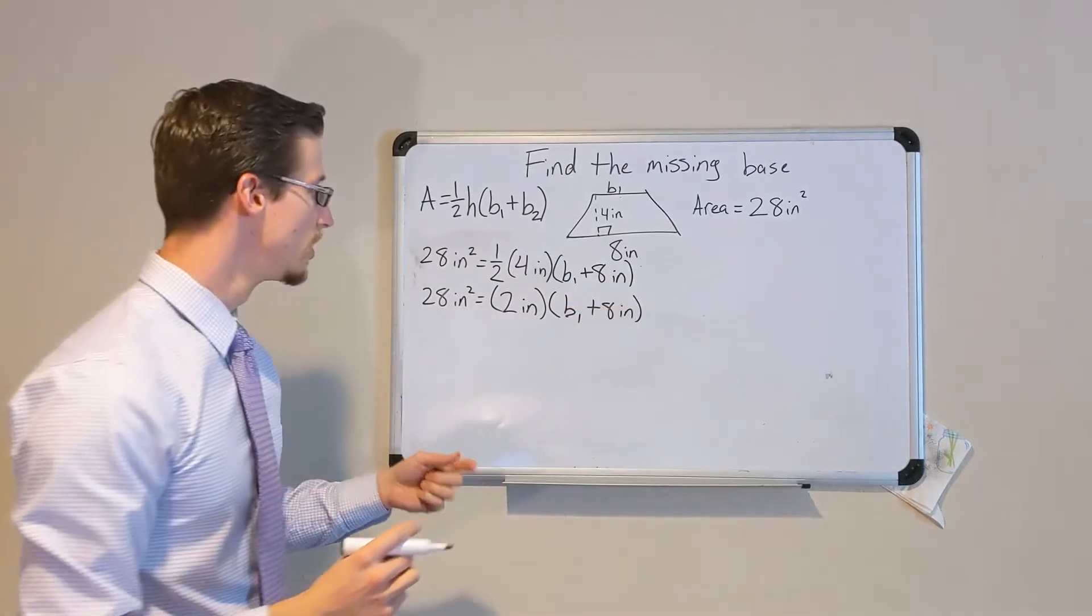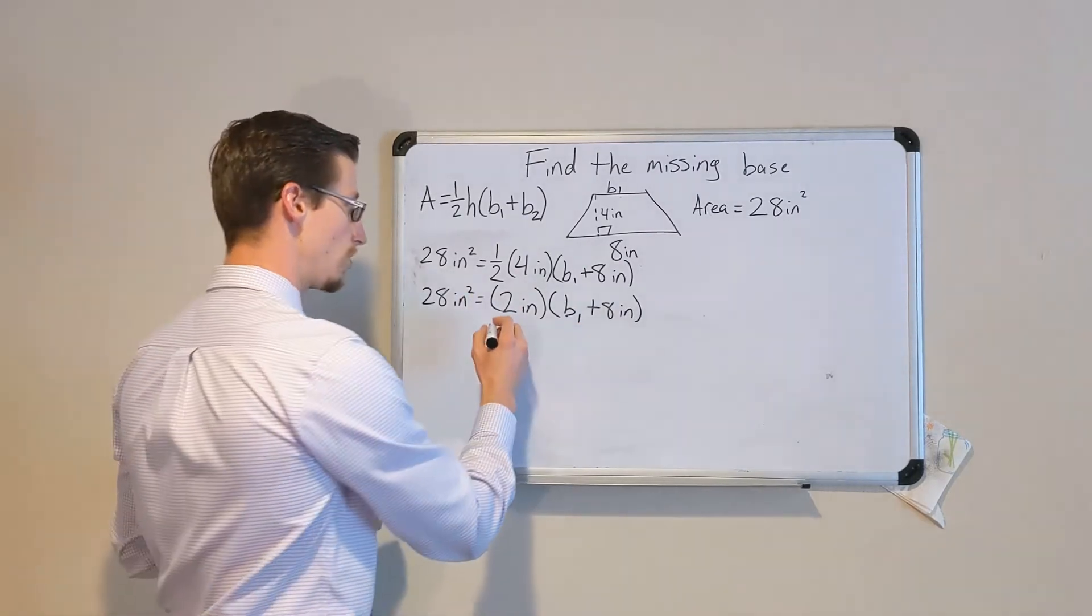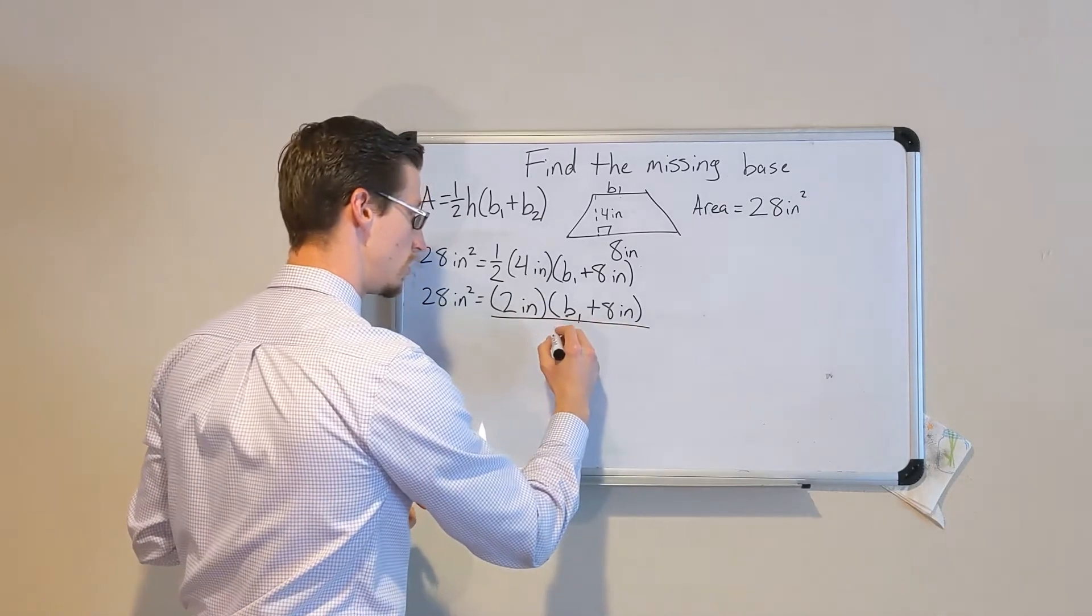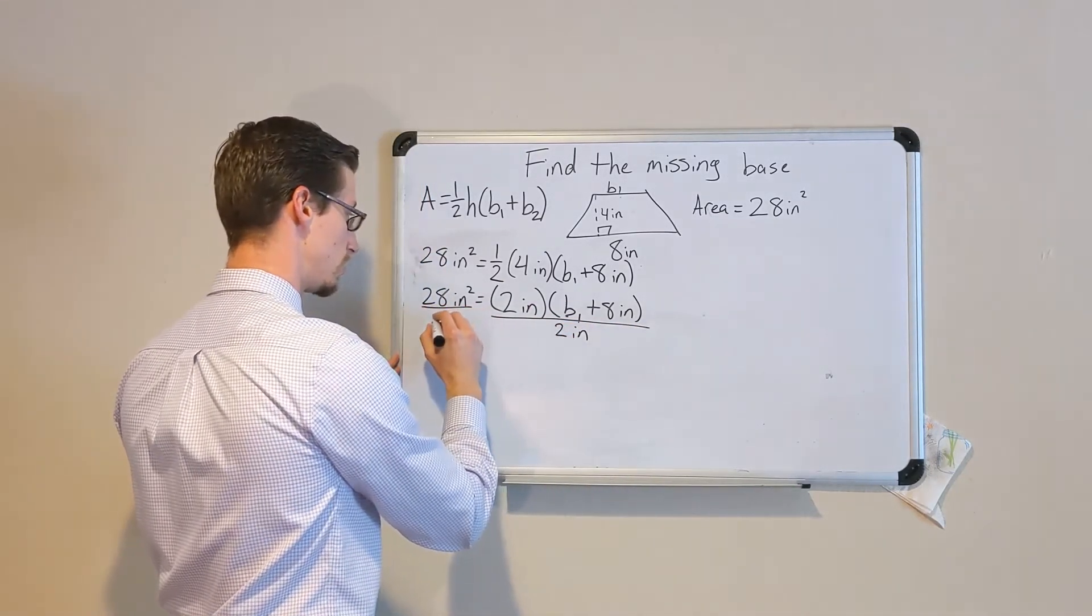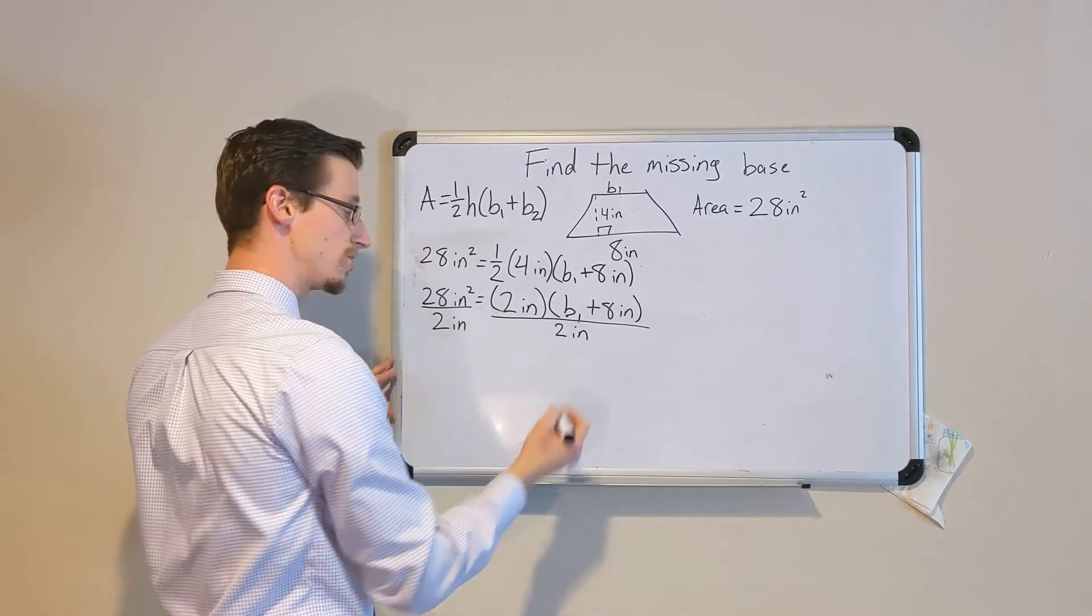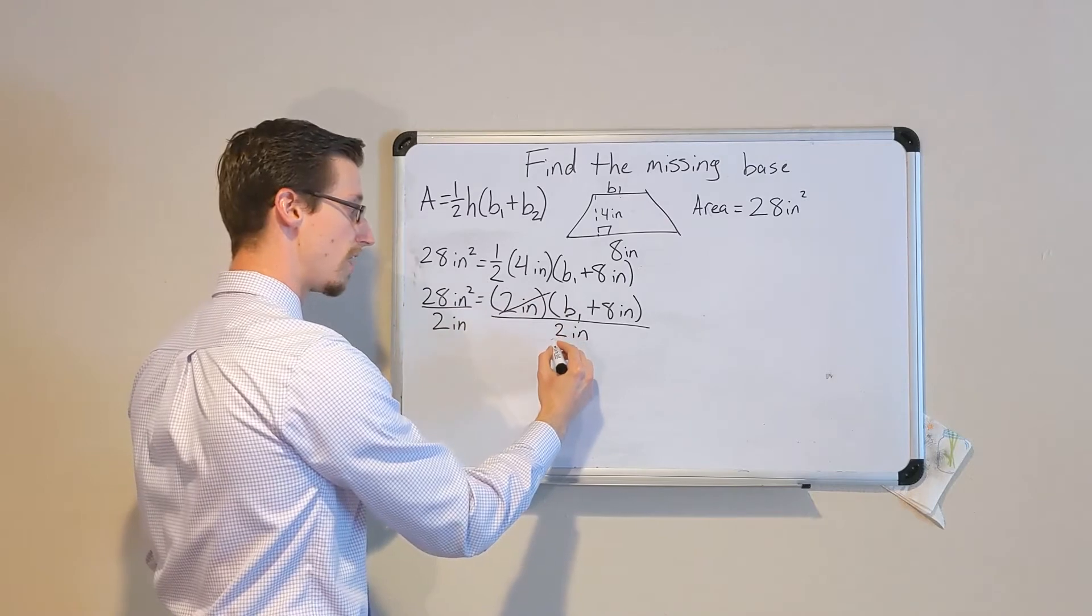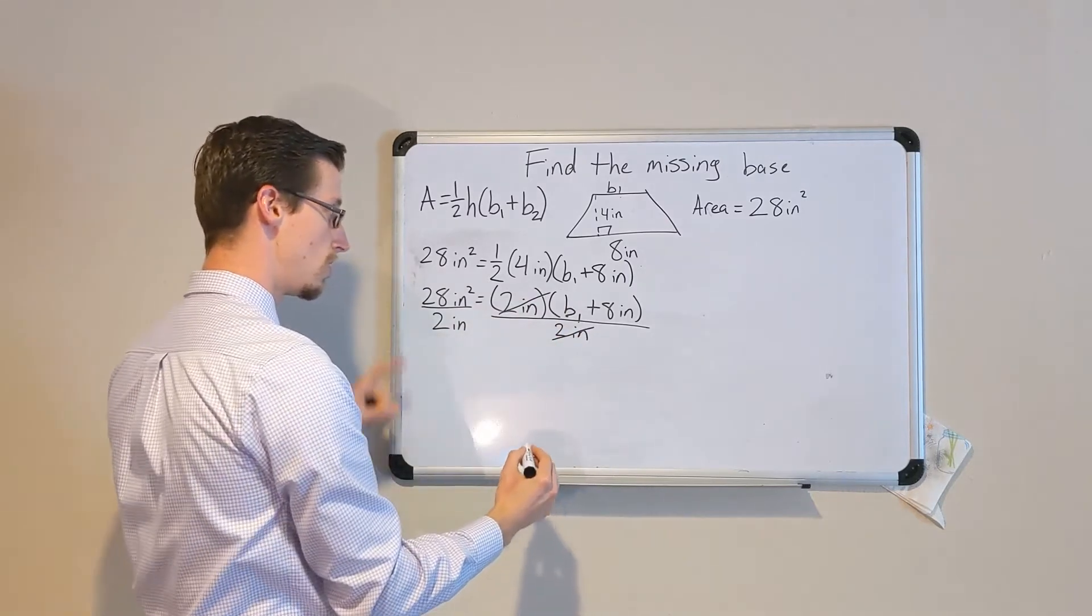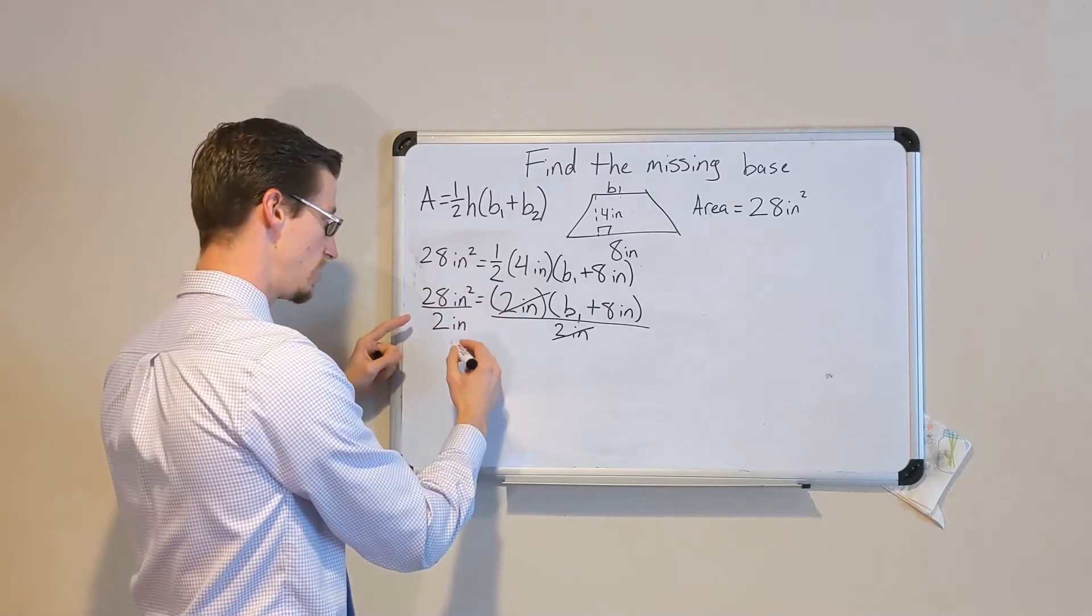Okay, so now we're multiplying these two values. To get rid of the multiplying by 2, I'm going to want to divide by 2 inches on both sides. So over here, the multiplying by 2 inches and then dividing by 2 inches cancel. On this side, 28 inches squared divided by 2 inches.